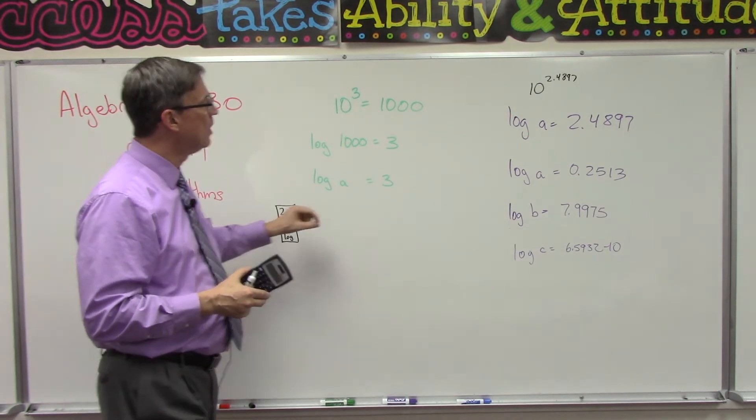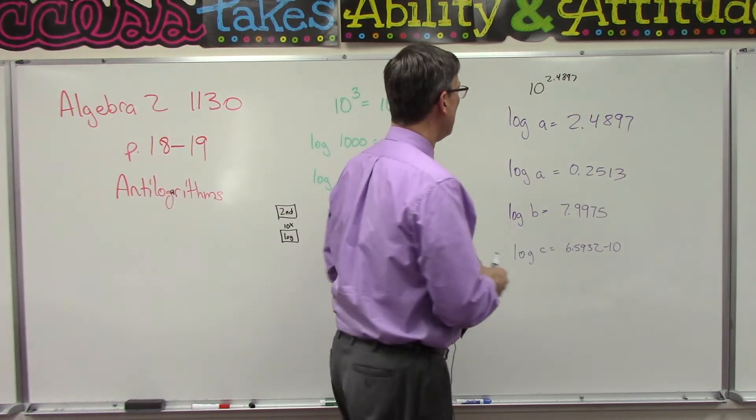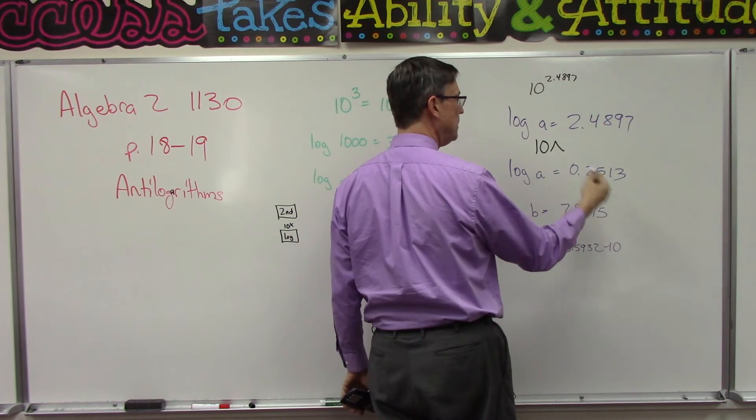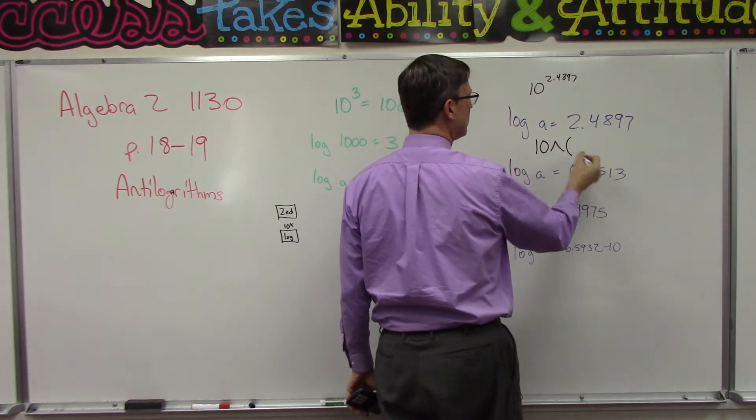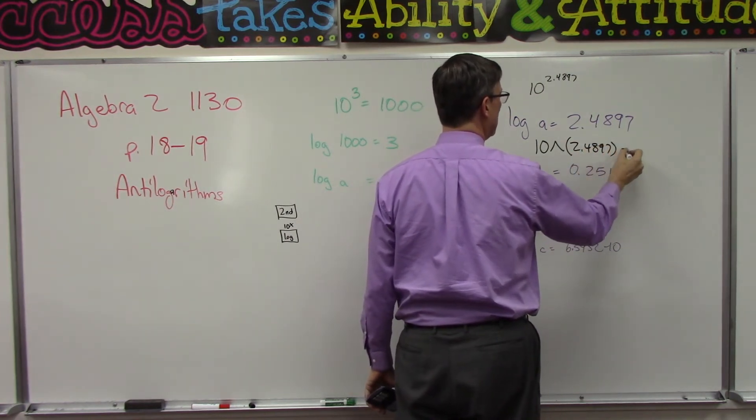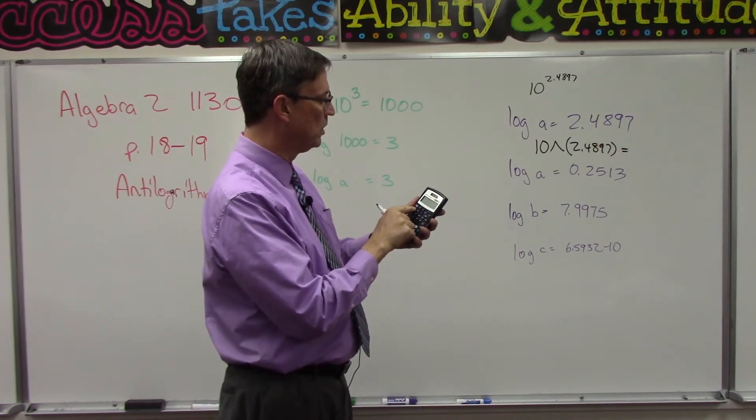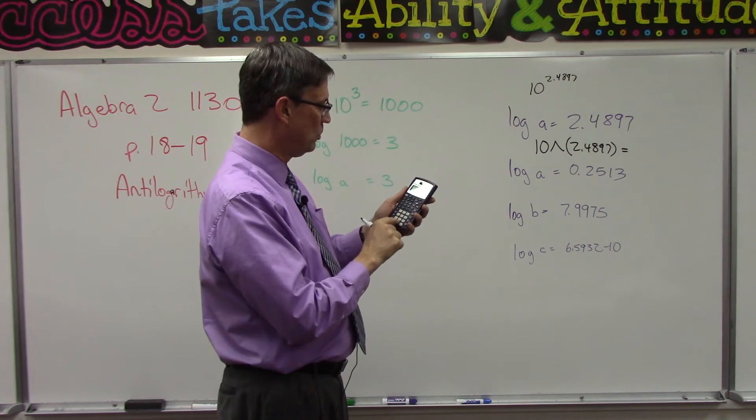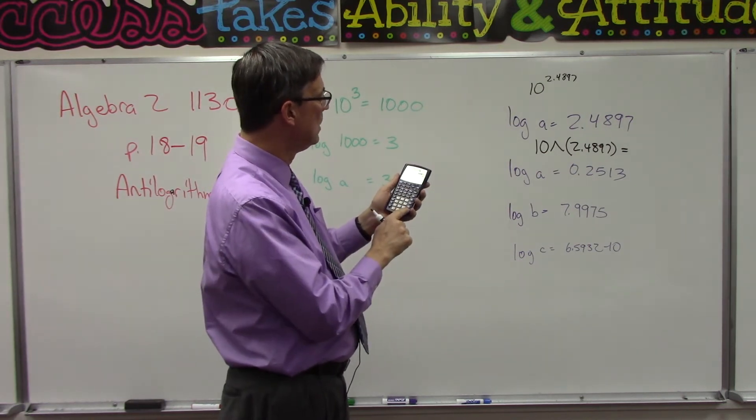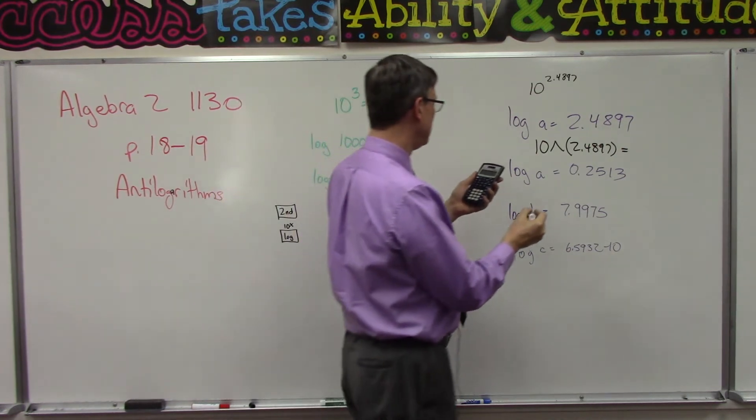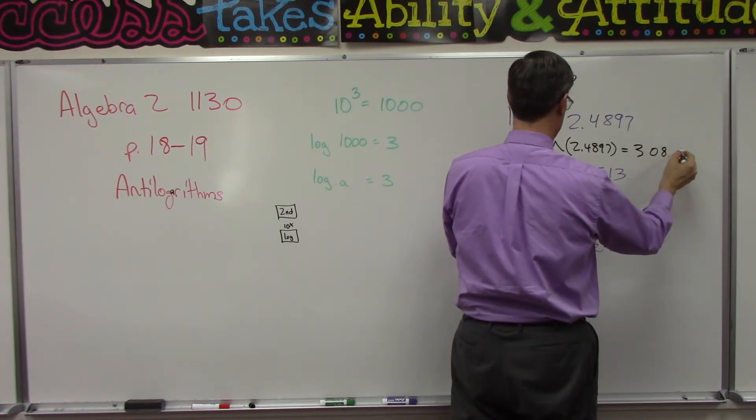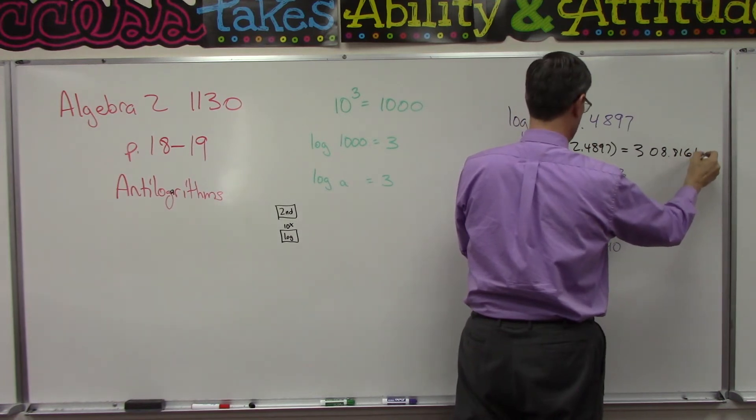So on my calculator when I do that, this is what it's going to look like. 10, and then it's going to look like a caret, which means raised to the power, and then it's going to open a parenthesis, and then I'm going to type in the 2.4897. And hit equals. All right, you try it with me here. Second function, log. Now type in the 2.4897. I went ahead and closed the parentheses. You don't have to. Hit equals and see if you get 308.81615.